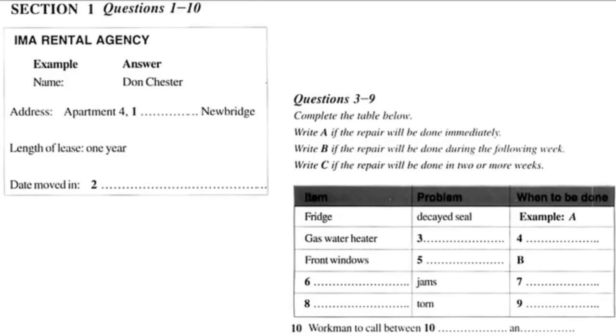Answer questions on what you hear. There will be time for you to read the instructions and questions, and you will have a chance to check your work. All the recordings will be played once only. The test is in four sections. Write all of your answers in the listening question booklet. At the end of the real test, you will be given ten minutes to transfer your answers to an answer sheet.